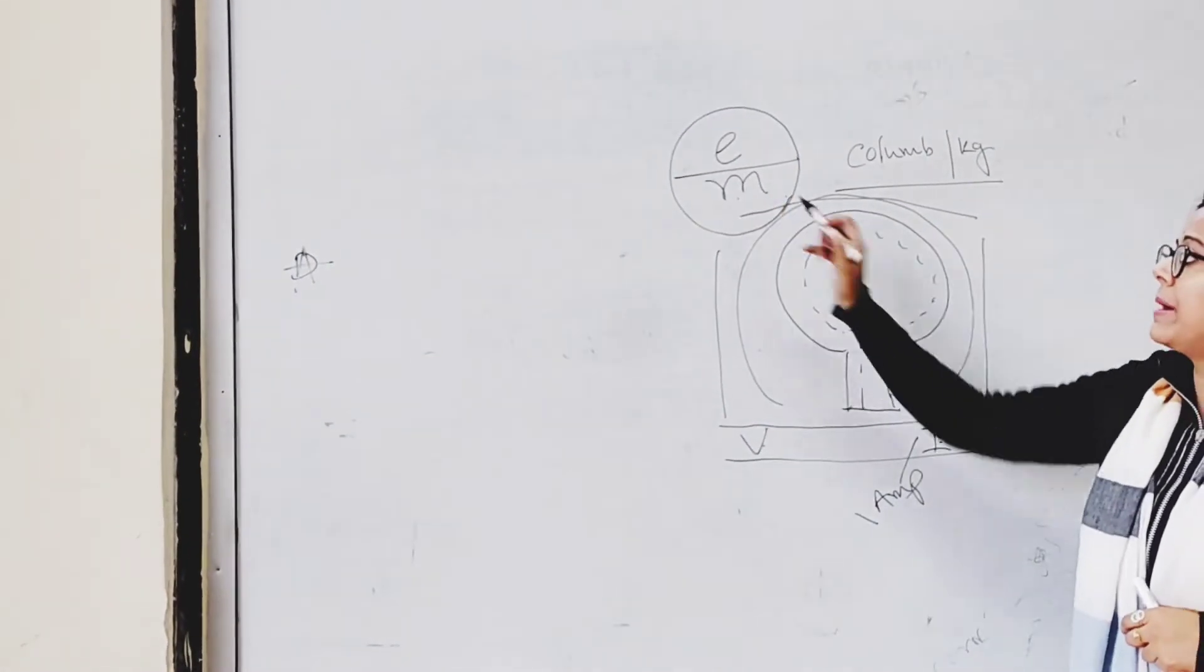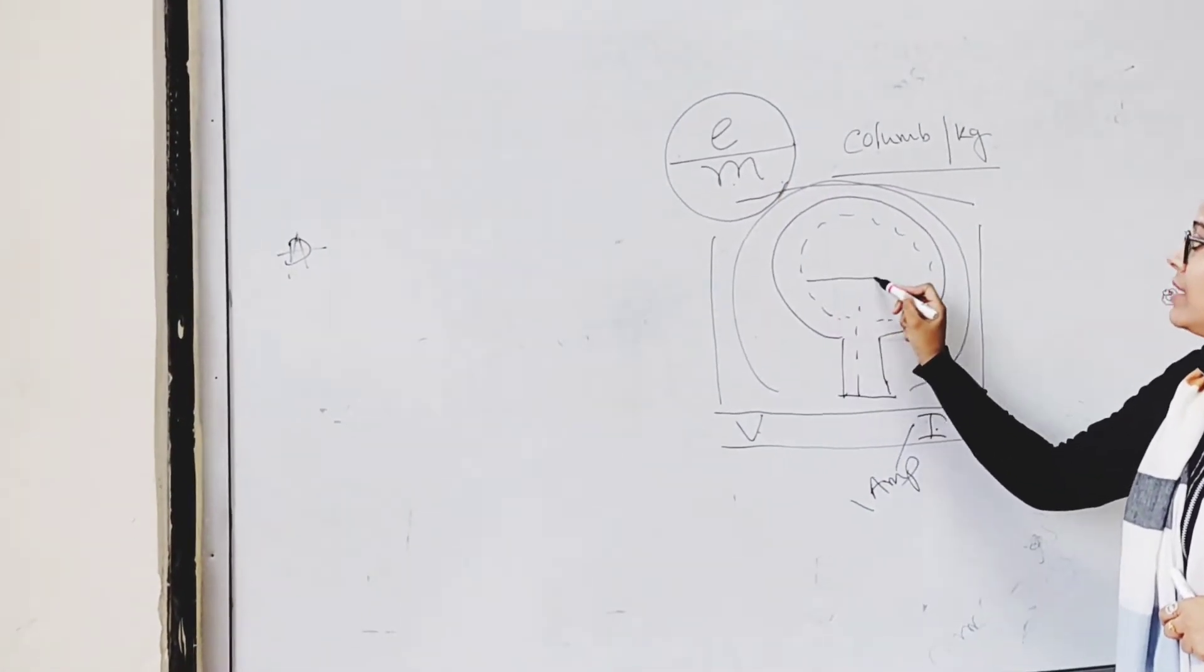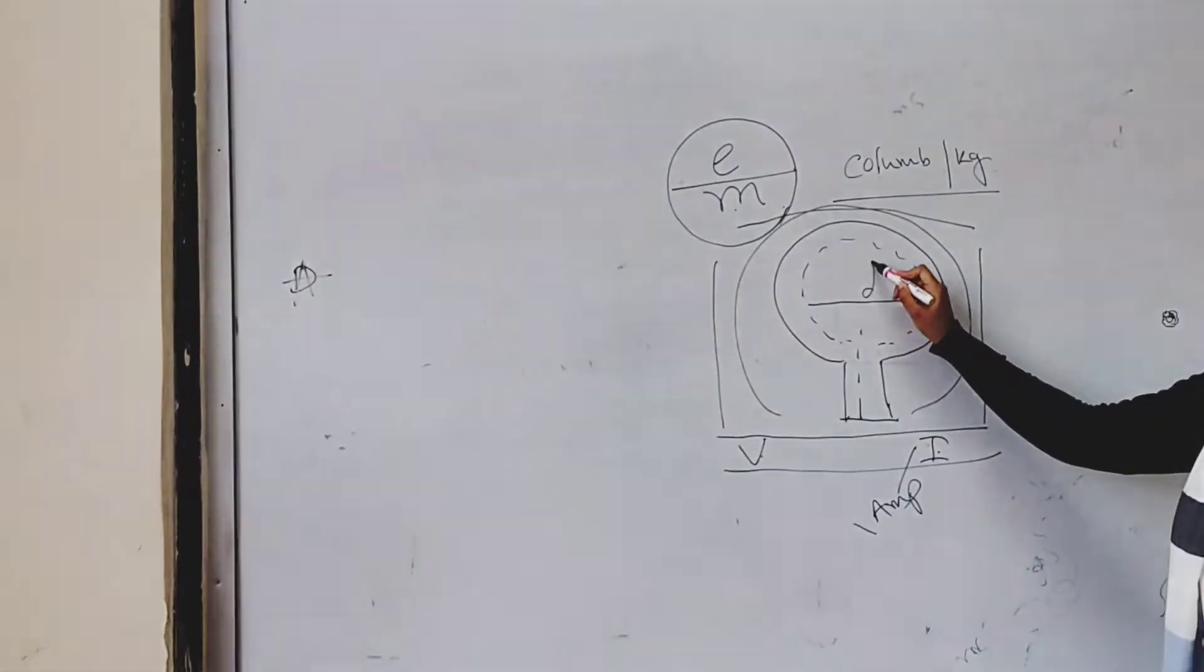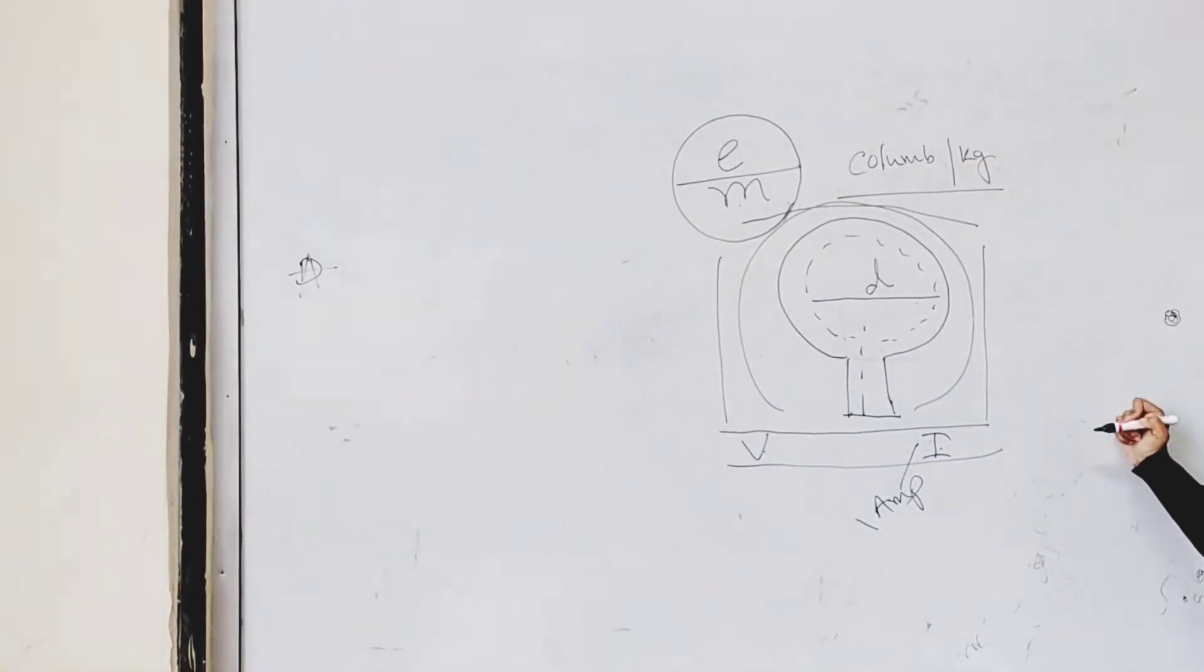So next to find e by m, we need to find out the diameter of this circular ring.